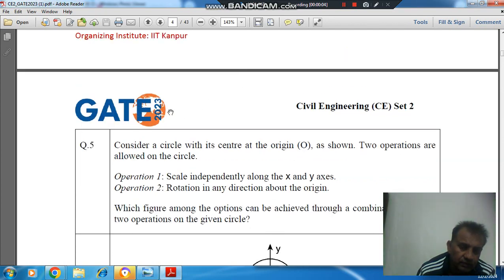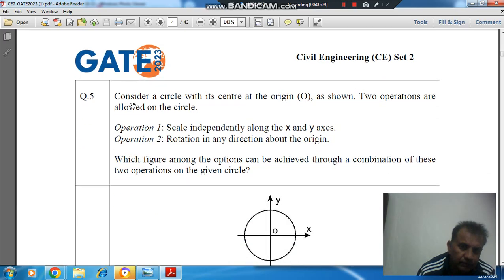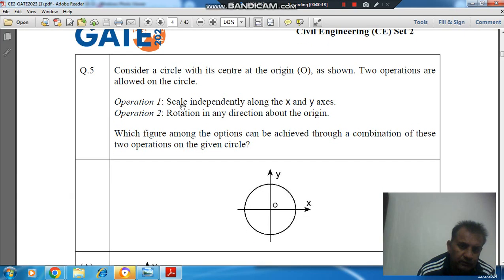Hello, welcome again. We are solving the narrative of GATE 2023 Civil Engineering Set 2, Question number 5. Consider a circle with its center at origin O as shown. Two operations are allowed on the circle. Operation 1: Scale independently along the x and y axes.